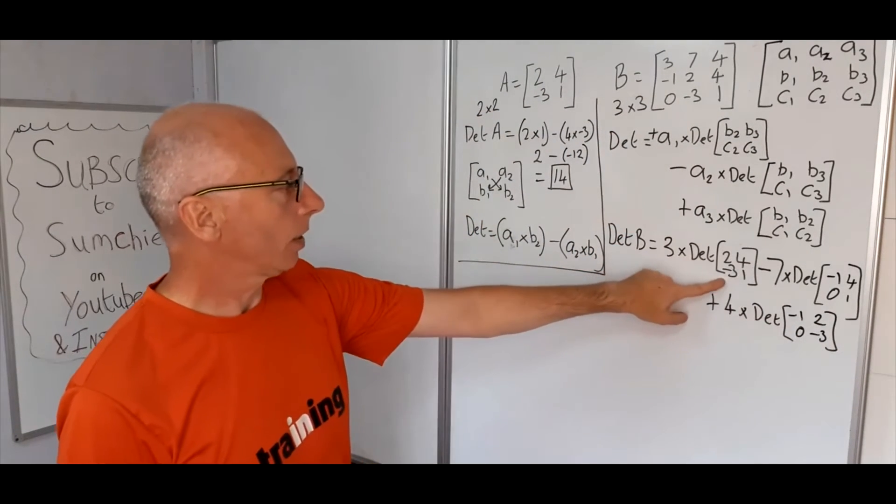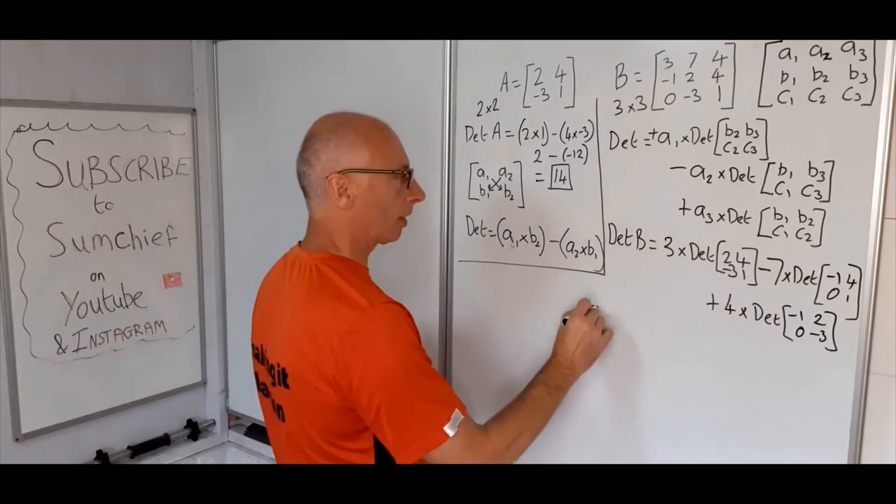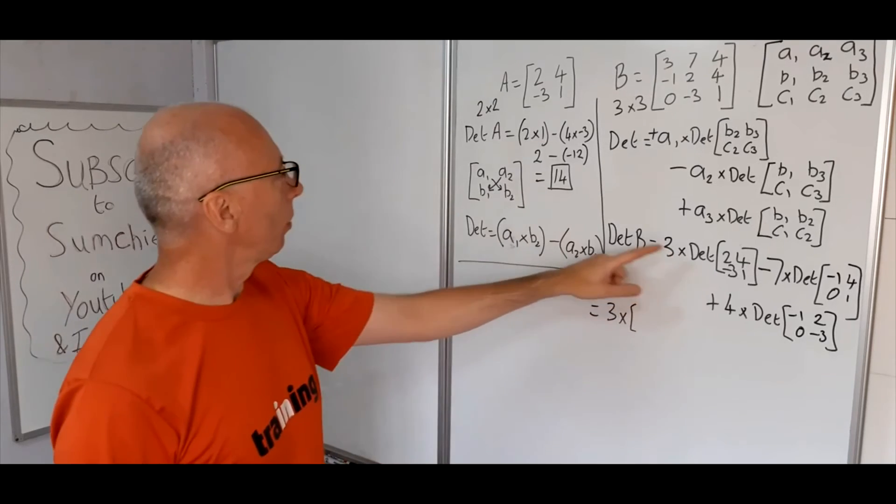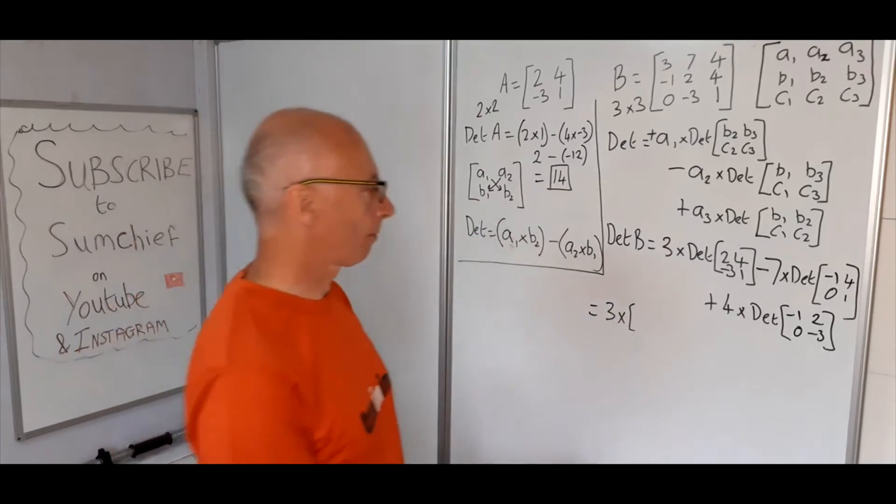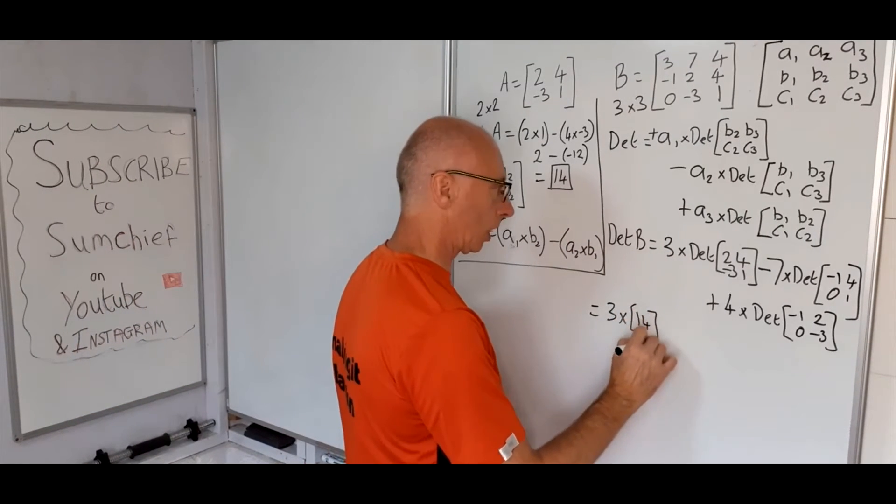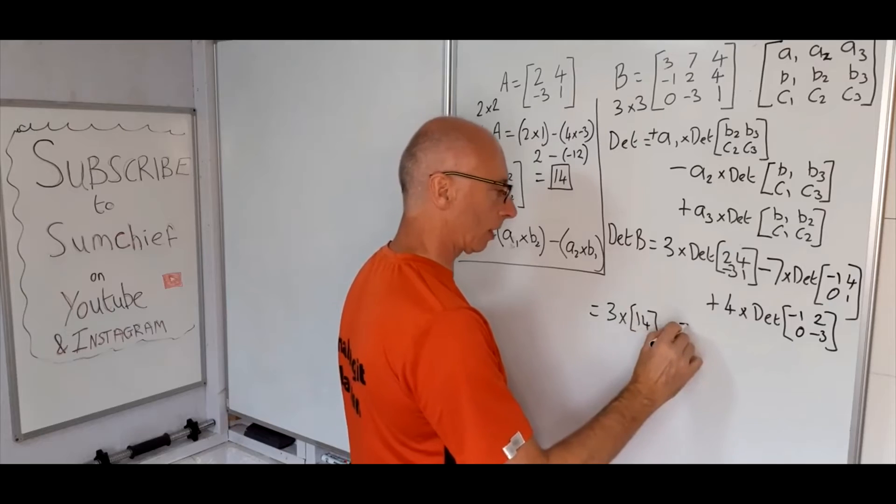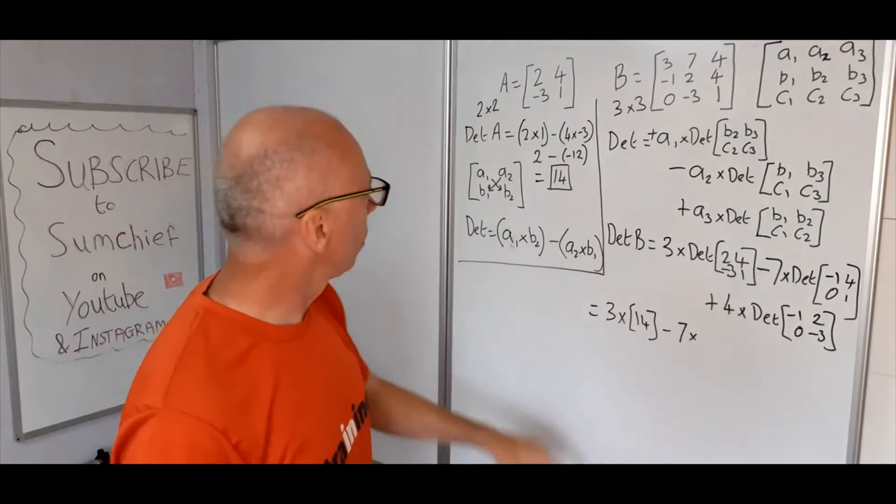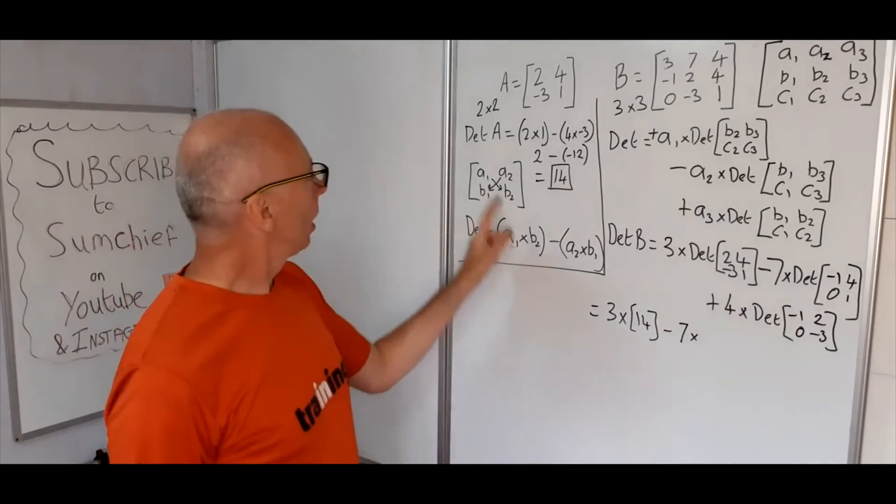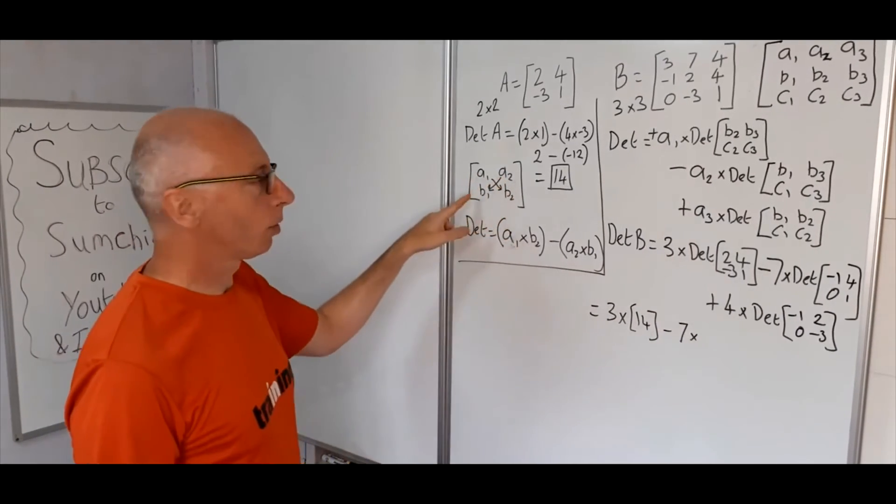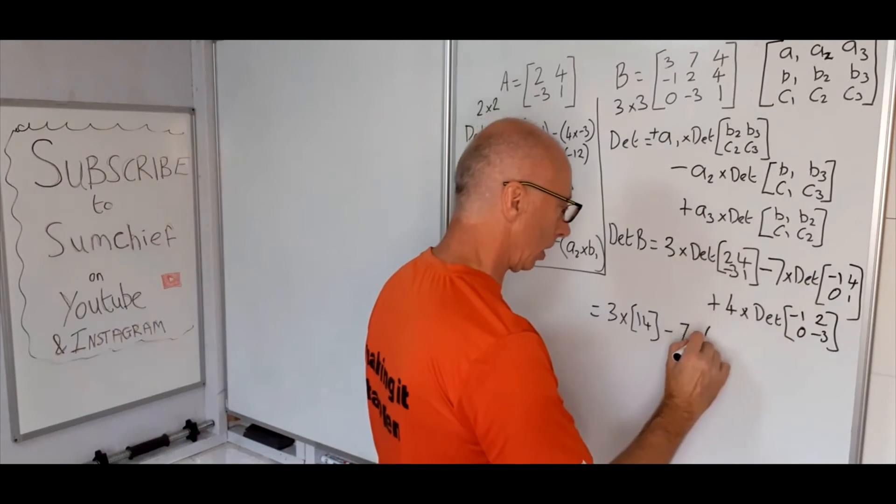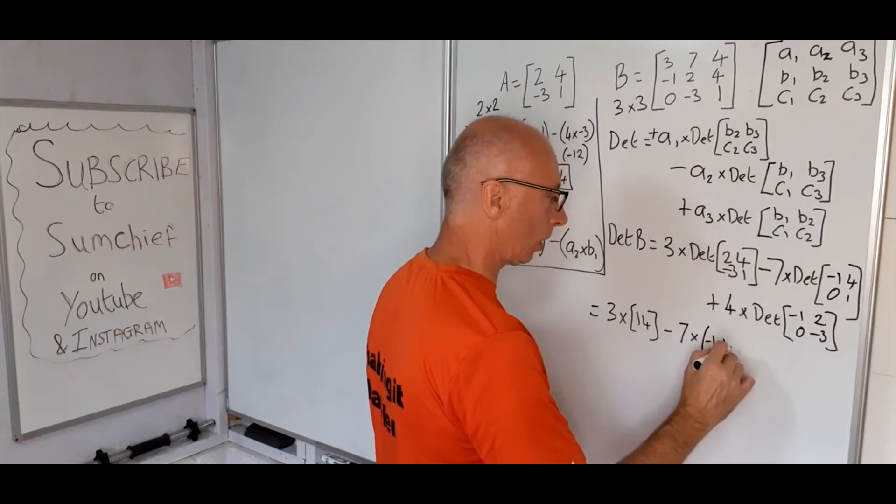Okay, so this one, as I said, we already know that. So it's 3 times, let's plug in the number for that, which was 14. That's 3 times 14. And then we subtract 7 times. Okay, using this technique here, with the cross, A1, B2, A2, B1. So minus 1 times 1. Let's just write that in there. Minus 1 times 1.